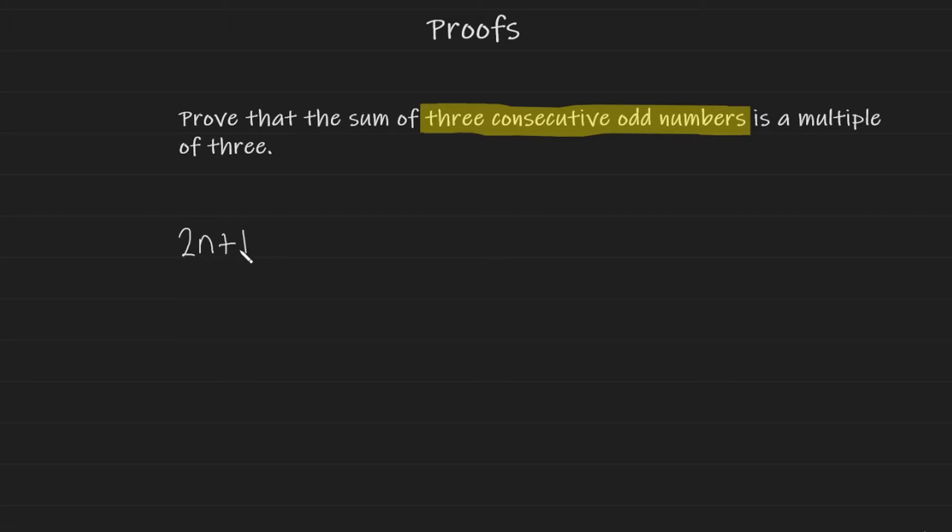So let me just go ahead and write down 3 consecutive odd numbers. 2n plus 1, I know that the next consecutive odd number is going to be 2n plus 3. And then the next consecutive one after that is going to be 2n plus 5. So there you have it. 3 consecutive odd numbers. And this is what the question is talking about.